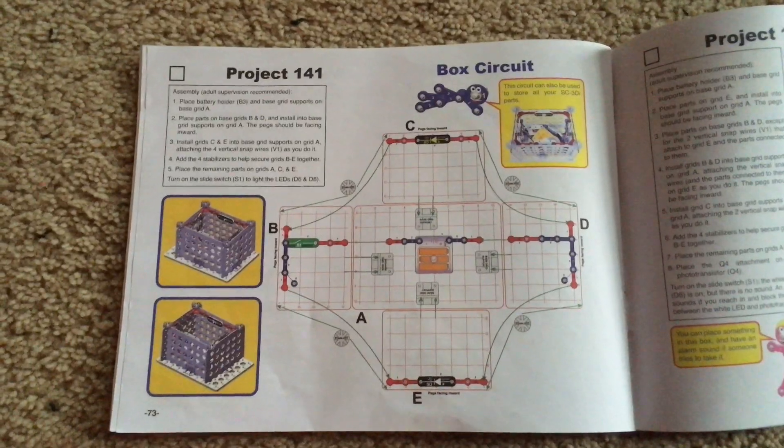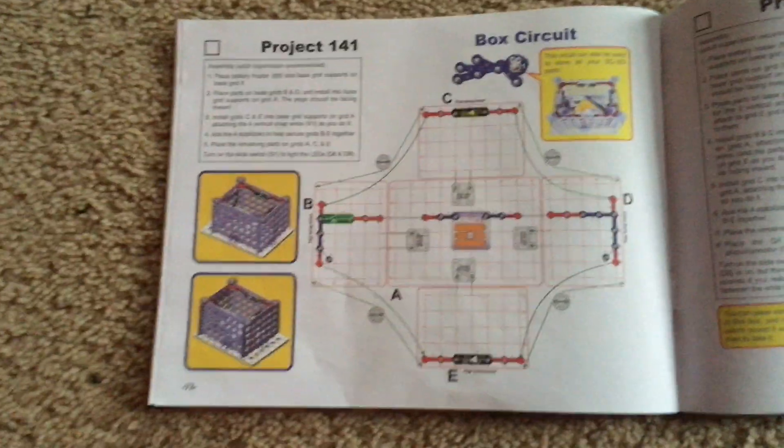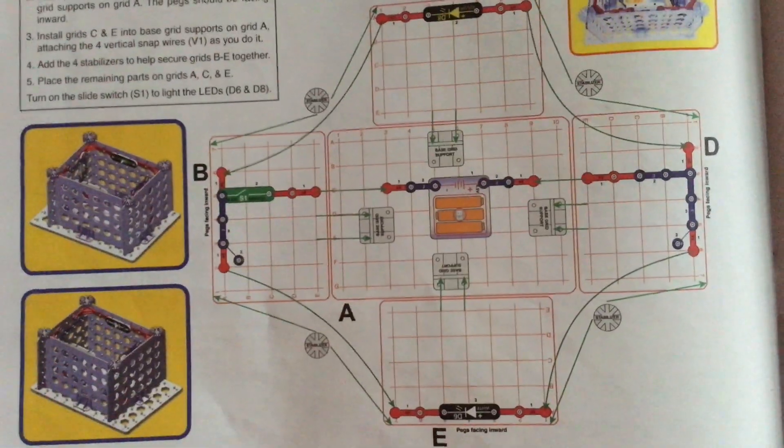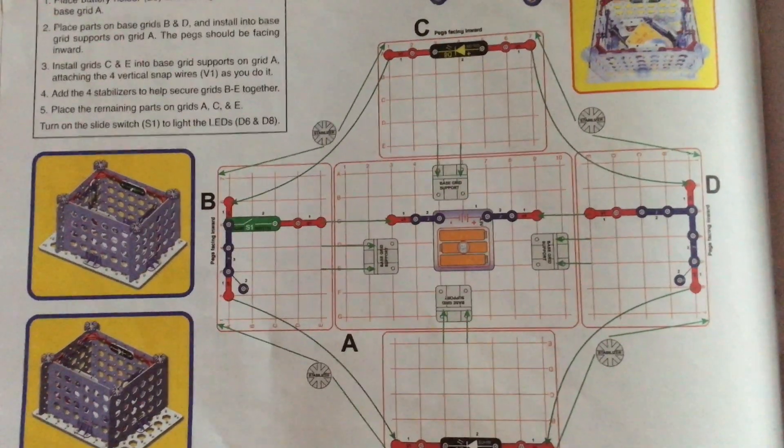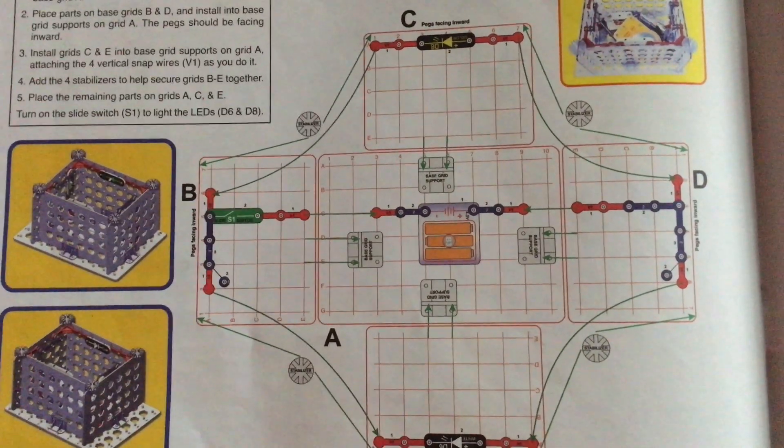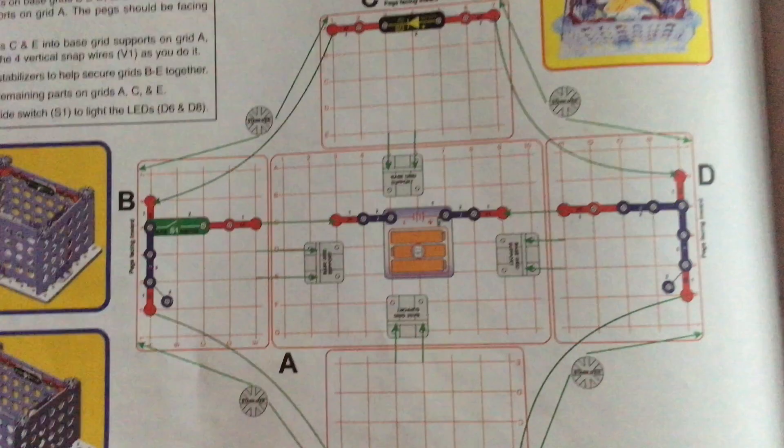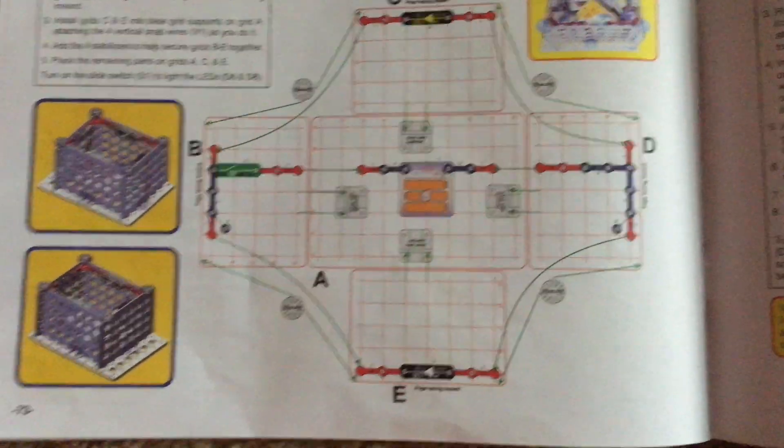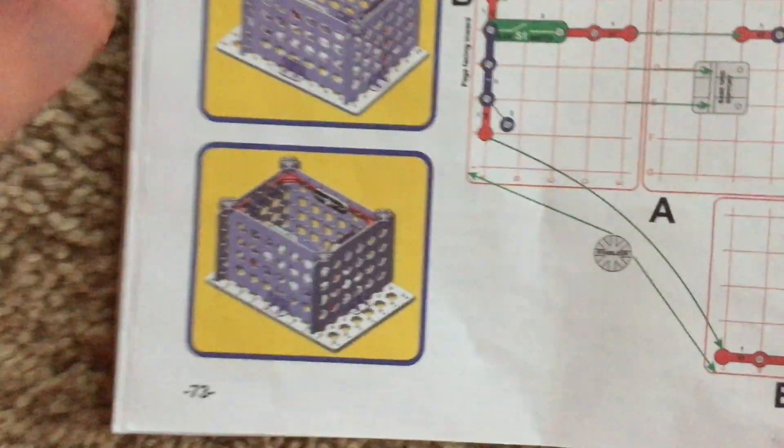Project 141, box circuit. We will use all four small base grids and attach them to the main base grid by following this diagram. Here's what the circuit should look like.